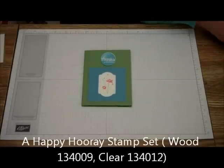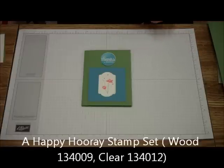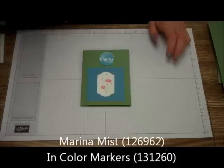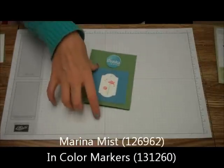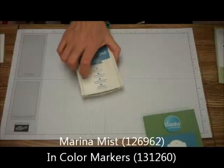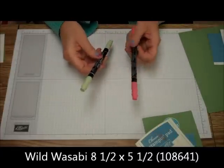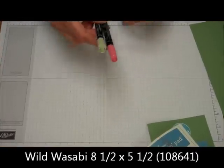What we're going to use for this one is the Happy Hooray Stamp Set, Marina Mist ink, the classic ink pad, and pistachio pudding and strawberry slush markers.